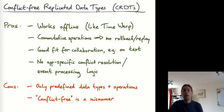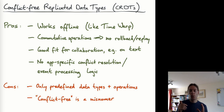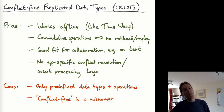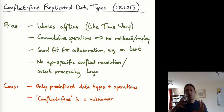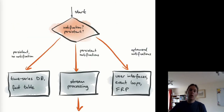A downside of CRDTs is that there are predefined data types — lists, maps, structures — and it's a fair bit of work to design your own. The types of operations are also predefined; for example, there are many data types for ordered sequences but not many allow reordering items, which can be added but isn't easily done by applications. Also, the term 'conflict-free' is somewhat debatable — you have built-in conflict resolution policies that resolve most conflicts due to concurrent updates automatically, but it's not entirely conflict-free in the strict sense.